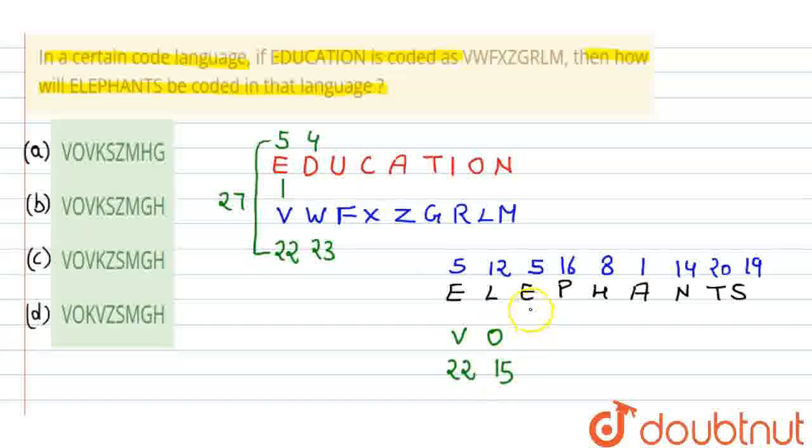Then fifteen term. Now E, what is the code? V, twenty-second term. Now P, that is K, that is eleven term.